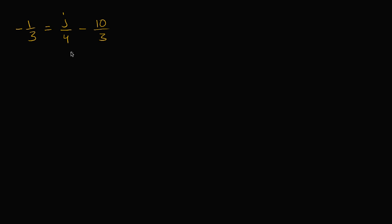Now let's work through this together. What I like to do is isolate the variable I'm trying to solve for on one side. Since j is already on the right hand side, let's get all the terms involving j on the right hand side and get rid of everything else. So I want to get rid of this negative 10/3, and the best way is by adding 10/3. But I can't just do that to one side of the equation — then it wouldn't be equal anymore.